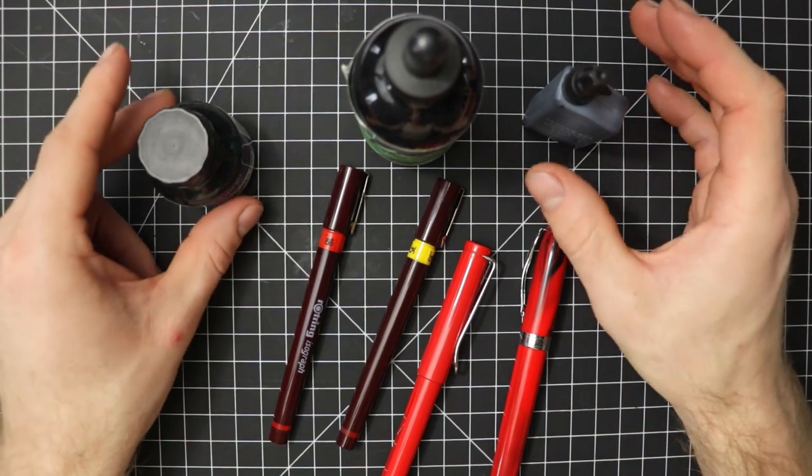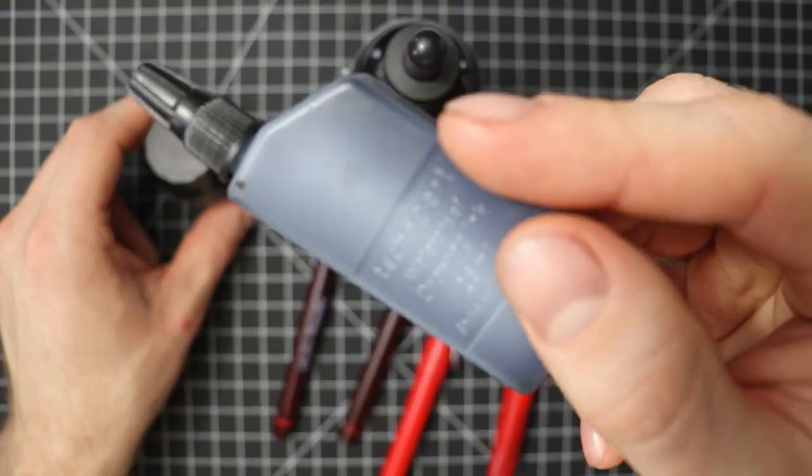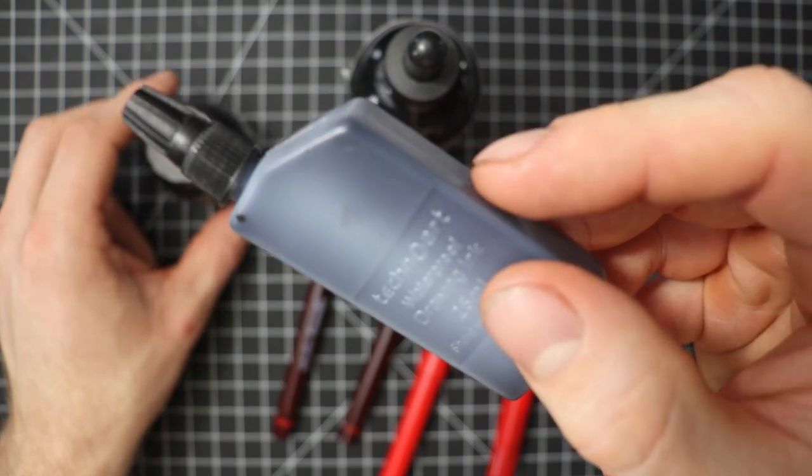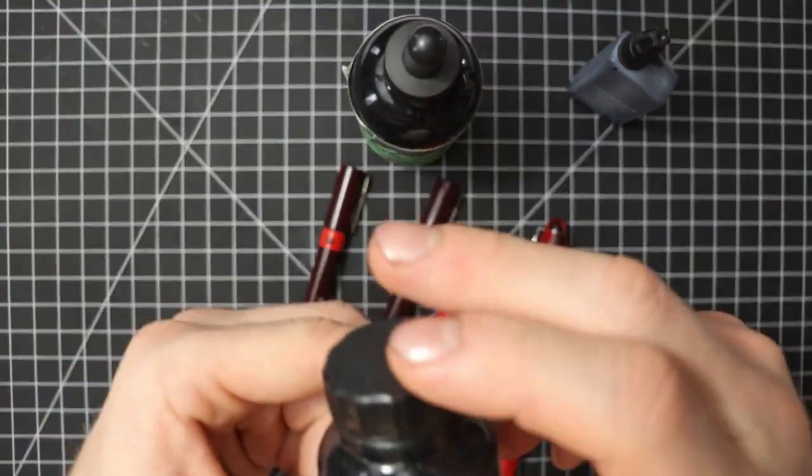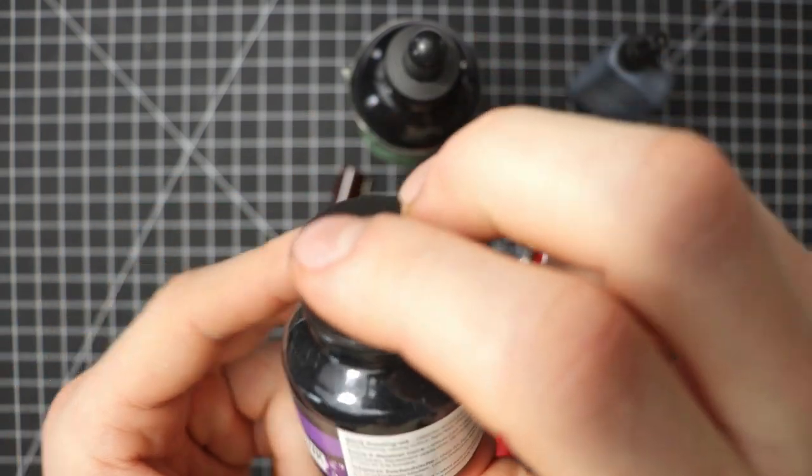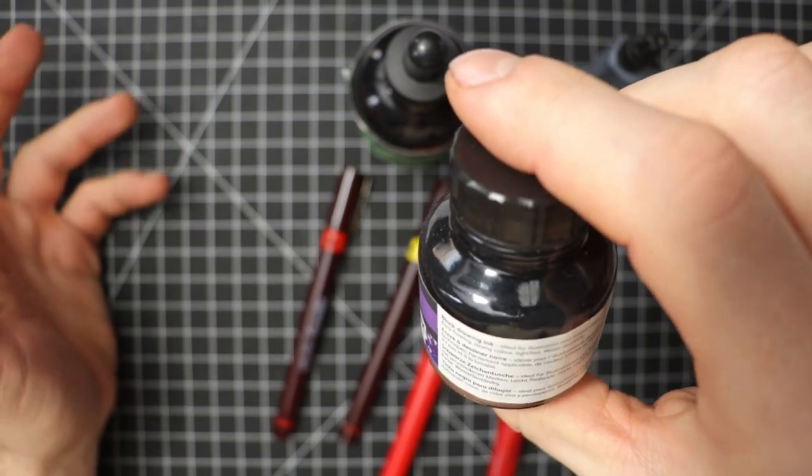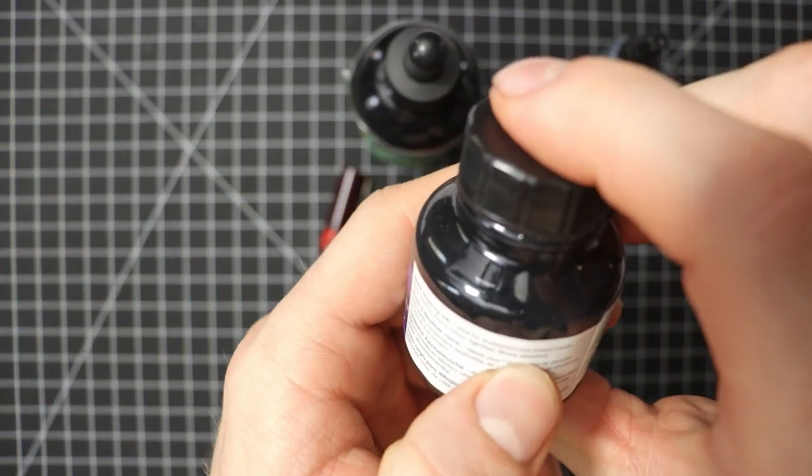So the inks that I have here. Now, this is the off-brand waterproof ink that I use for my rotring Isographs. This is an India ink which is used for calligraphy and illustration drawing and stuff like that as you can see here.